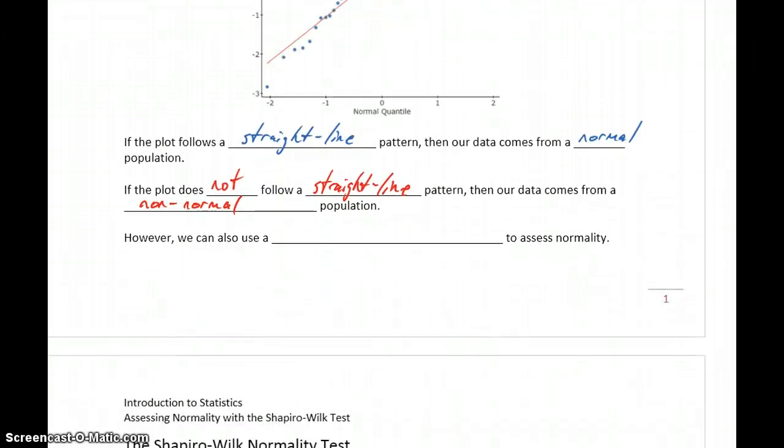That's a previous method we looked at. But now we want to introduce a new method for assessing normality. Since we're talking about hypothesis testing, we're going to introduce a method that lets us use hypothesis testing to test a claim about the normality of our data. But again, in the end, we'll come to one of the same two conclusions: either that our data comes from a normal distribution or comes from some non-normal distribution.